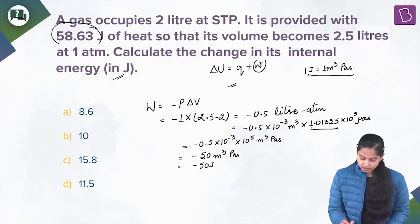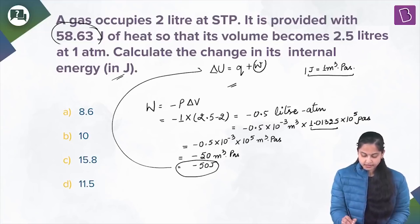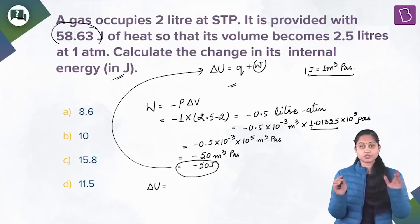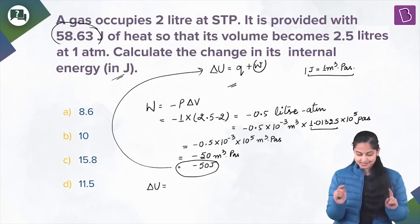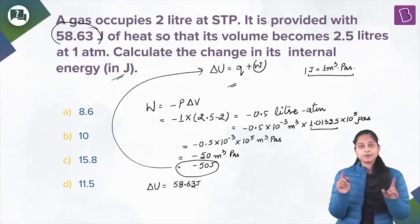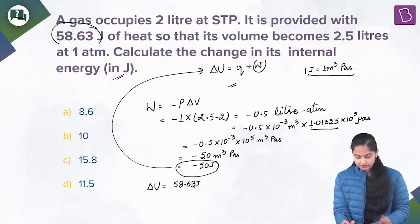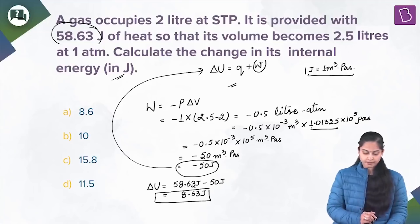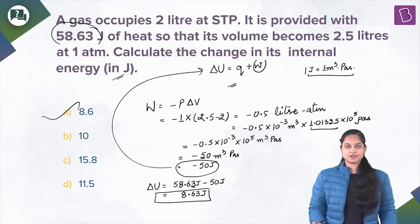Substituting into the first law: ΔU = Q + W = 58.63 + (−50) = 8.63 joules. This is the change in internal energy. Option A is absolutely right for this question.